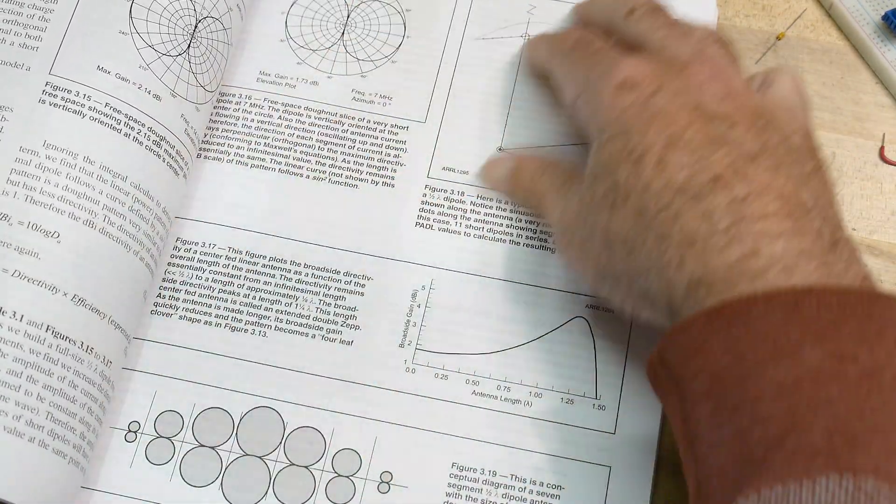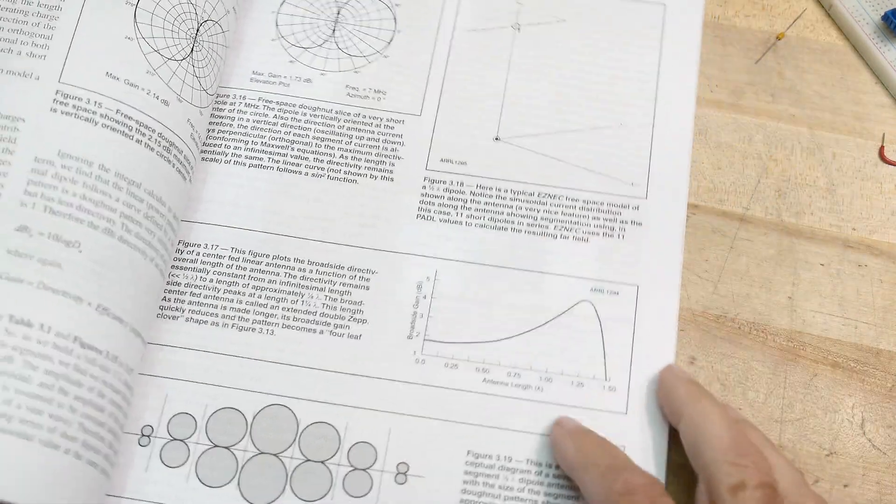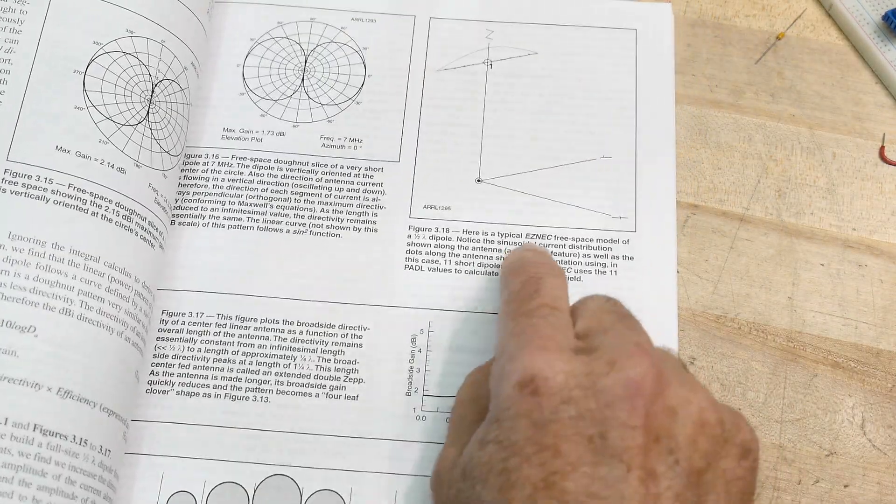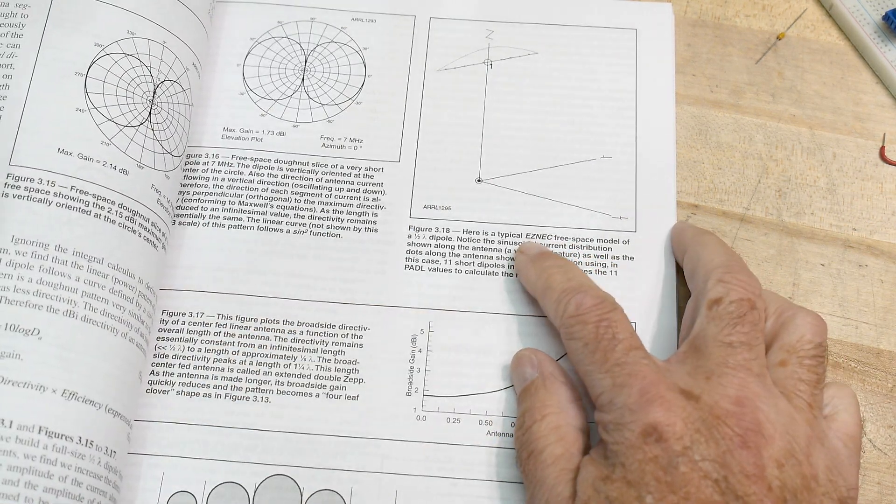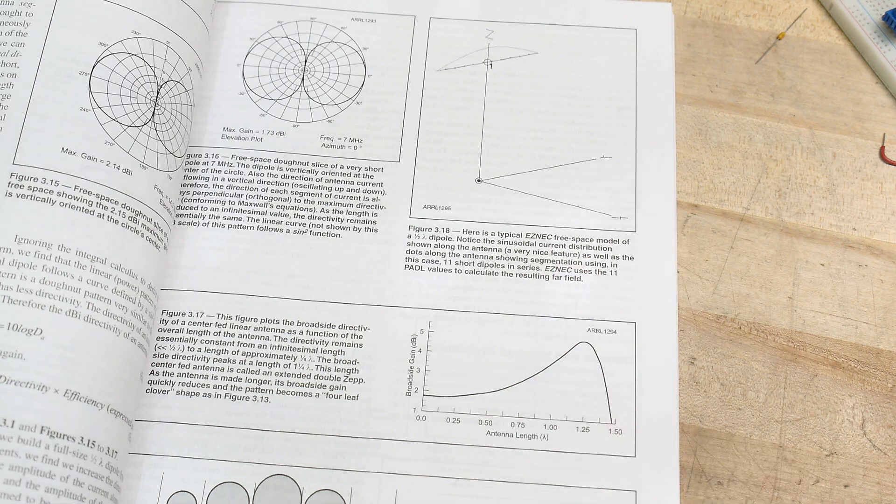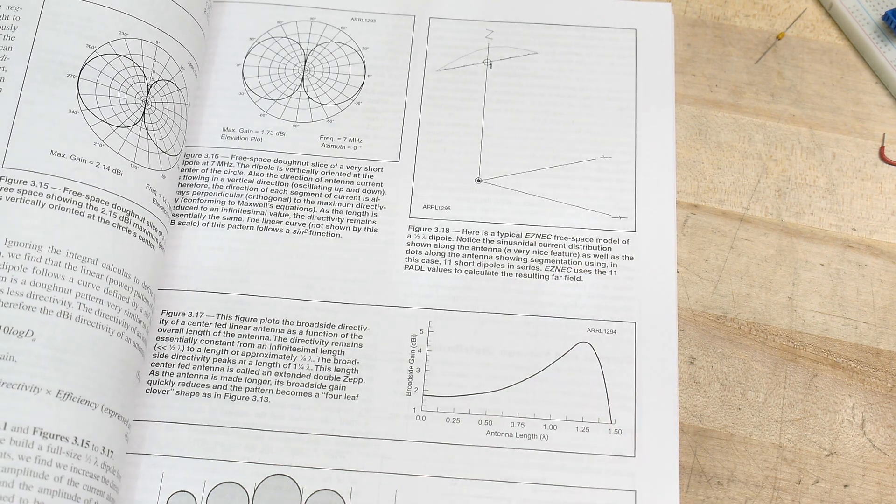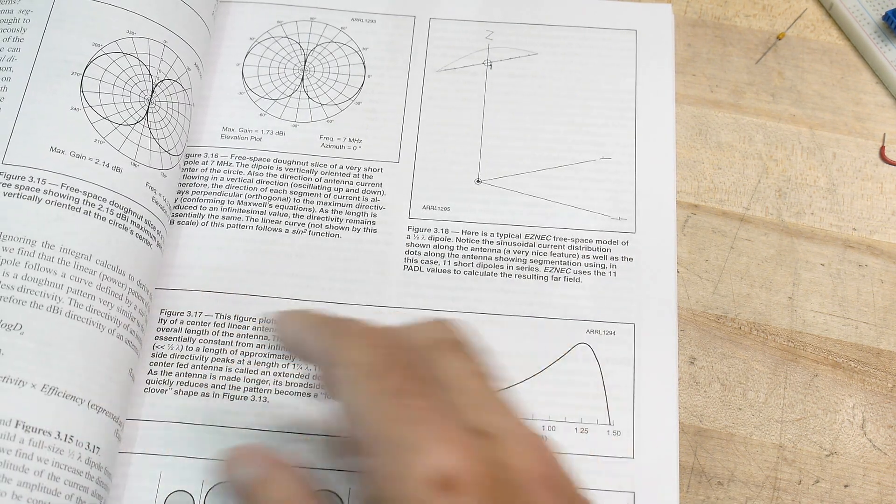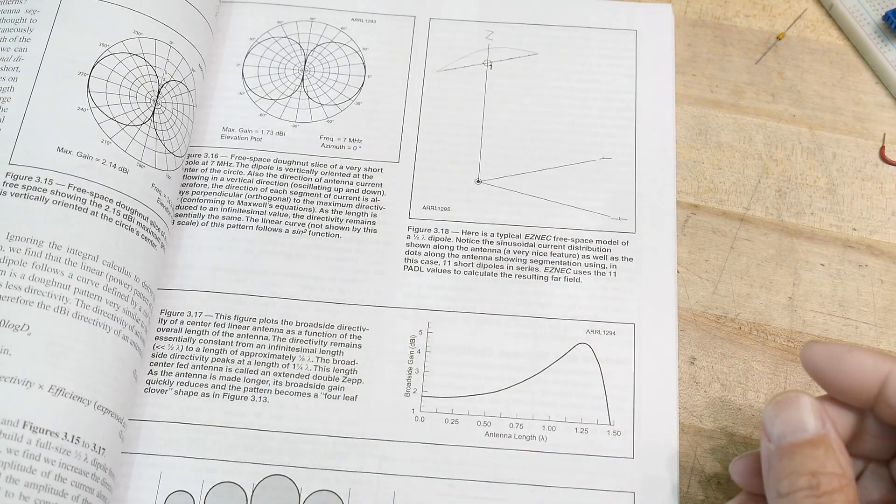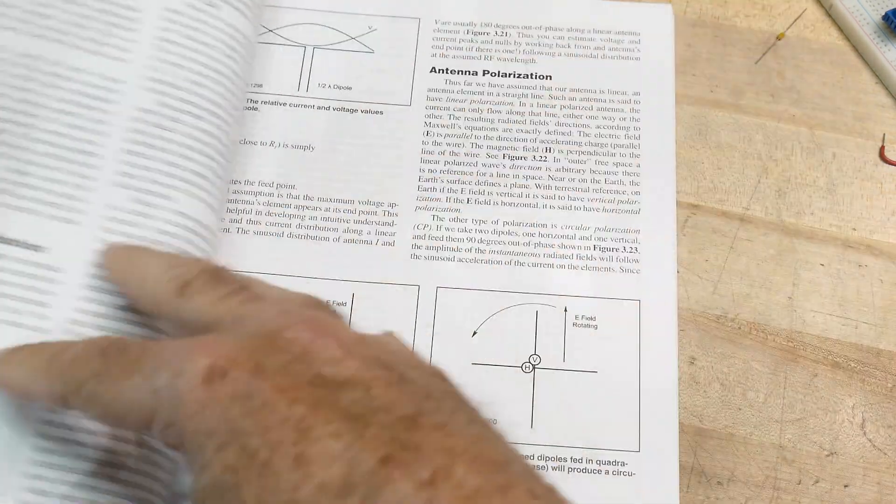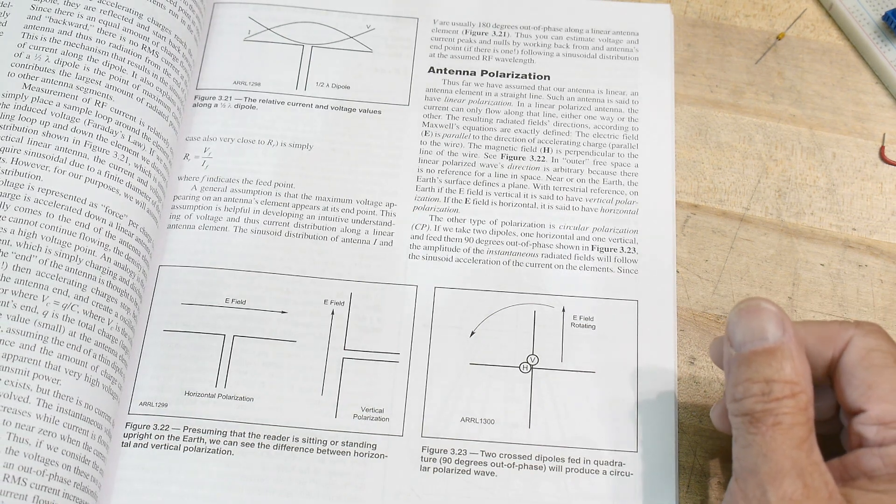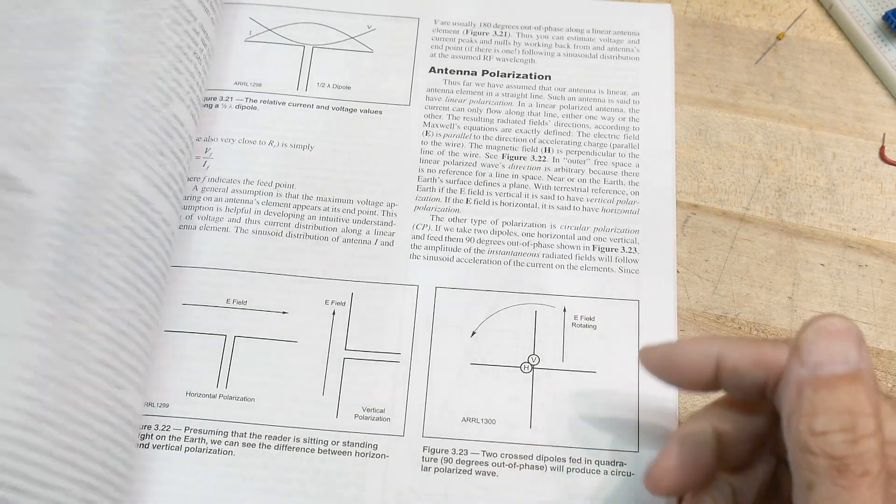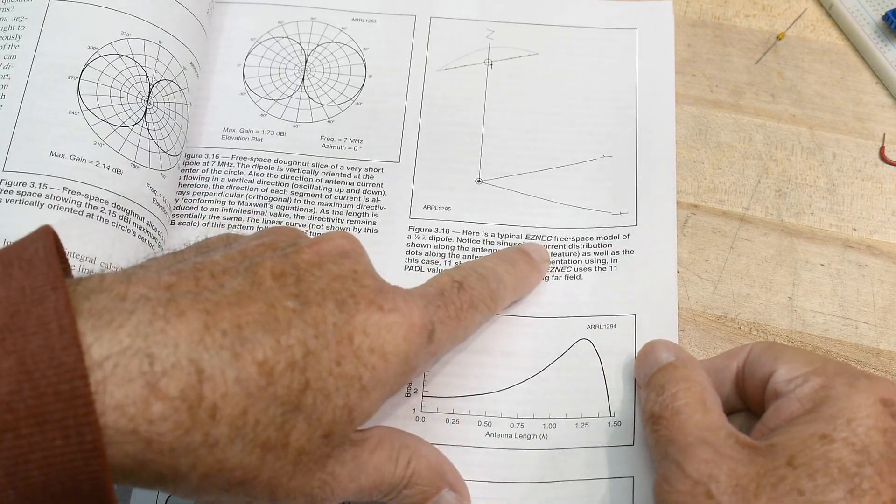They basically kind of hand wave all this stuff and then they say, okay, really what you do these days is you get this program called easy NEC. I don't know if I'm pronouncing that right. Easy NEC. And it does all of these equations in three dimensions and allows you to model things.